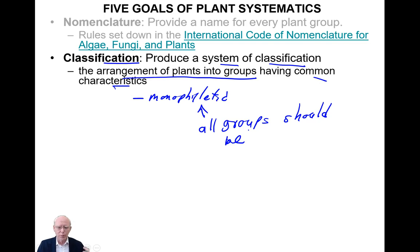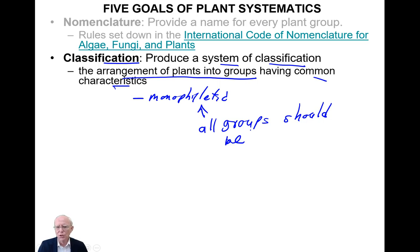It's only been in the last 30 years that there has been a widespread consensus in science that we should have monophyletic groups in our classification. We are going to talk about the history of classification and why people think groups should be monophyletic, because, as I say, it has not always been so.